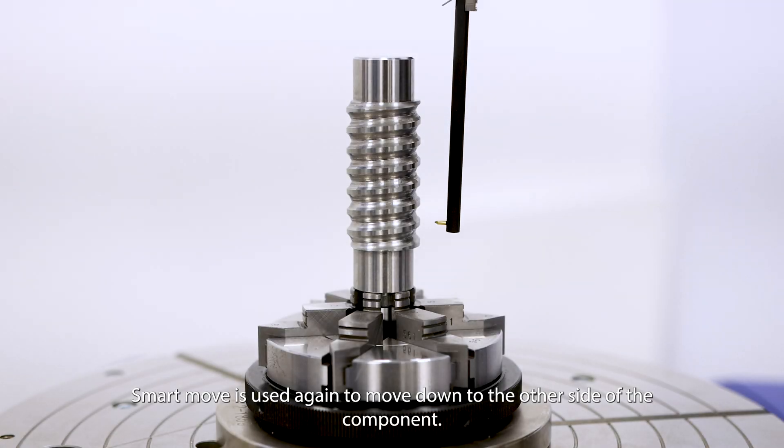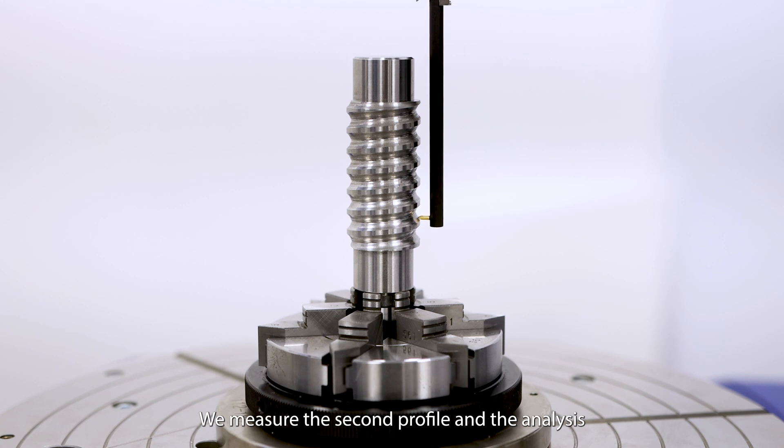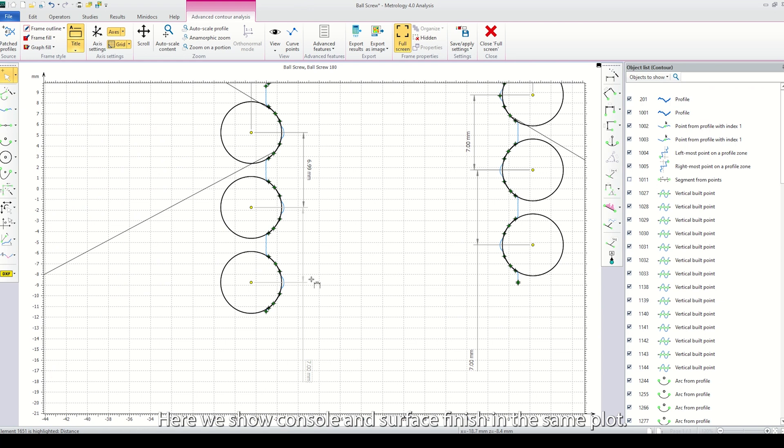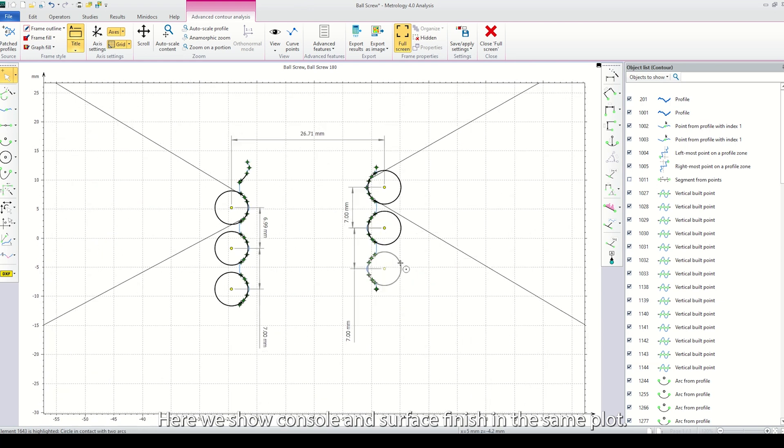SmartMove is used again to move down to the other side of the component. We measure the second profile and the analysis is automatically displayed. Here we show contour and surface finish in the same plot.